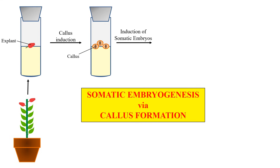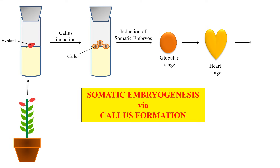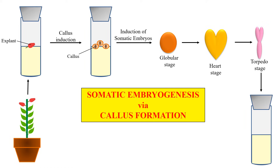In the next step, this callus is induced to change into somatic embryos. This induction is usually done by certain growth regulators which allow the callus to change into somatic embryo. The formation of somatic embryo generally passes through the globular stage, which is converted into a heart-shaped embryo or heart stage, and which is ultimately converted into torpedo stage or torpedo embryo. This torpedo stage embryo is then allowed to grow or proliferate on the medium.